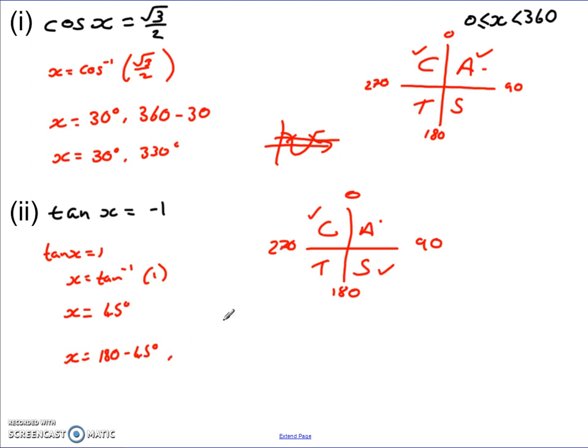and 360 take away the 45 degrees to get the C region. Calculate both of those. So 180 minus 45 gives you 135 degrees. 360 minus 45 gives you 315 degrees. There you go. So you've got your two sets of answers there.